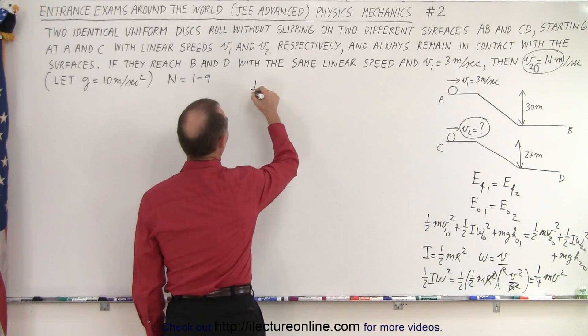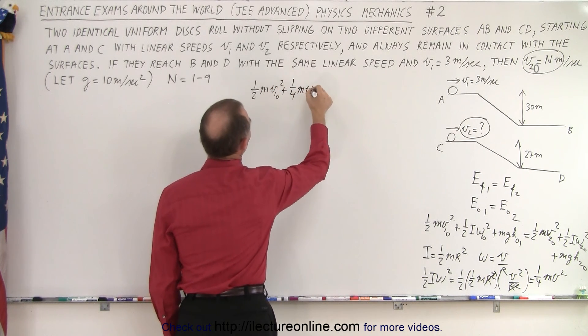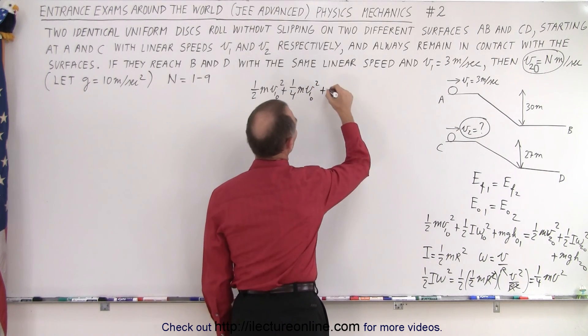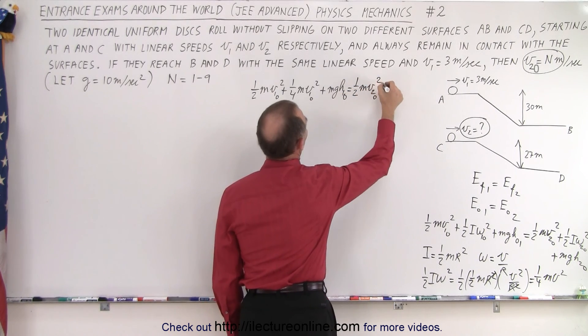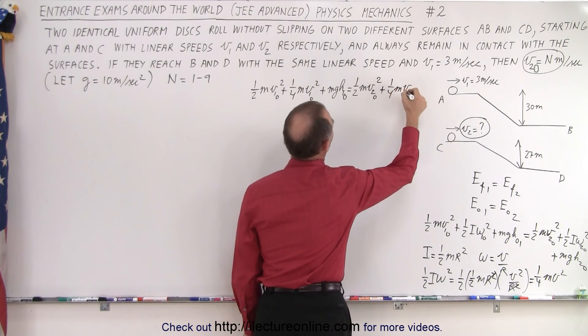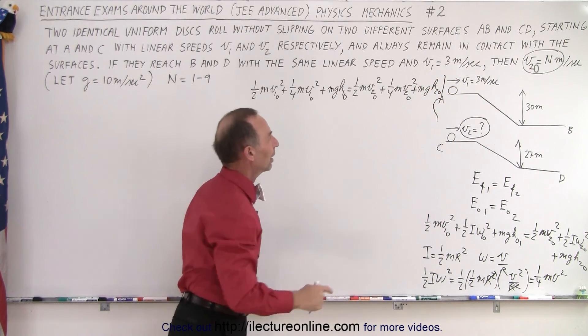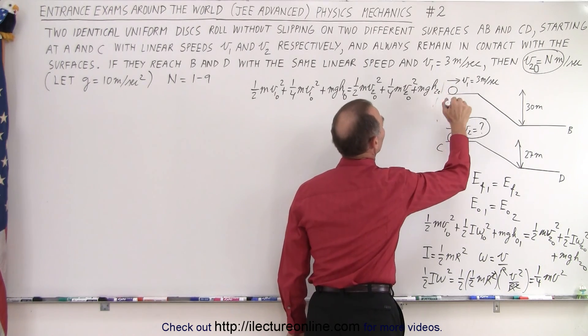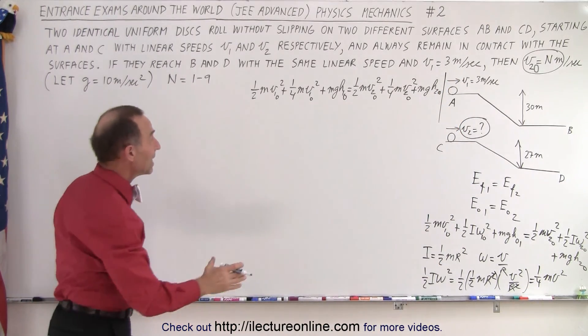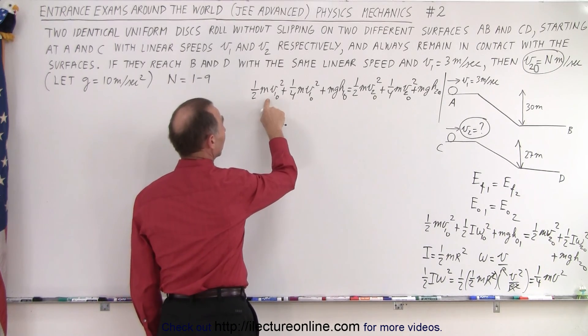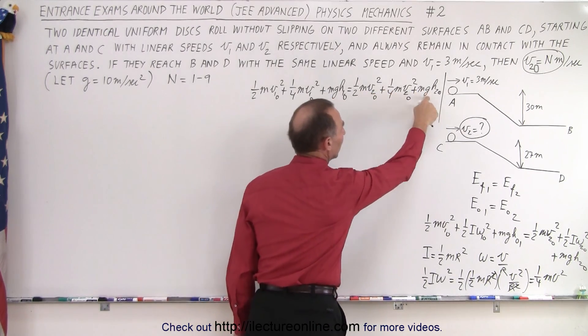So let's put that in here. So we have 1/2 m v1 initial squared plus 1/4 m v1 initial squared plus the potential energy which is m g h1 initial is equal to 1/2 m v2 initial squared plus 1/4 m v2 initial squared plus m g h2 initial. So now we have the initial kinetic energy of the first object in terms of the linear kinetic energy, rotational kinetic energy, initial potential energy, again linear kinetic energy, rotational kinetic energy, and initial potential energy.